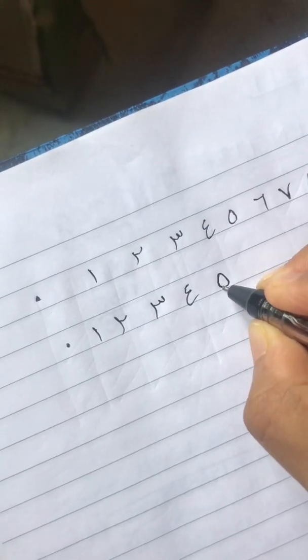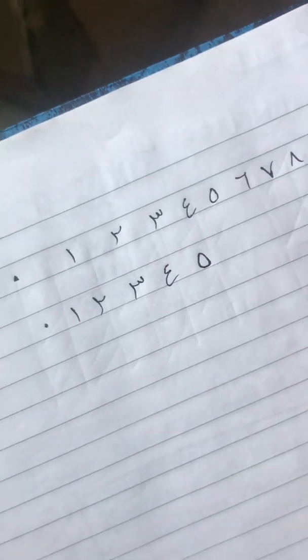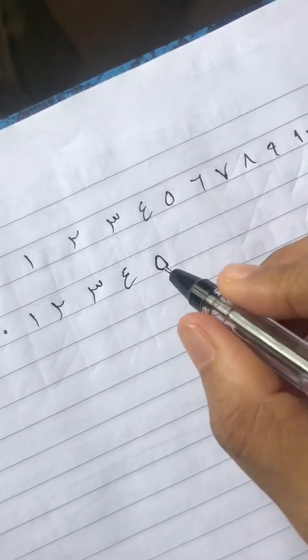And khamsa, five, it's just you have to put a round kind of thing. It's not a complete circle, you can see it's like a triangular circle.